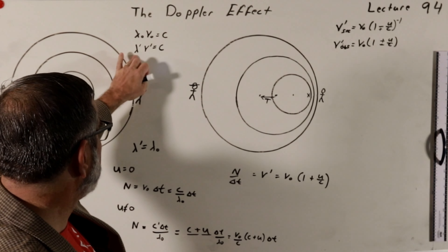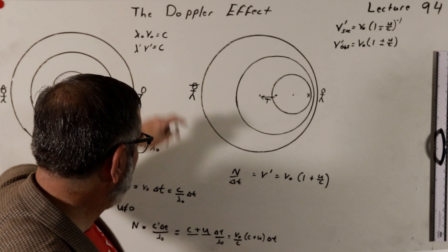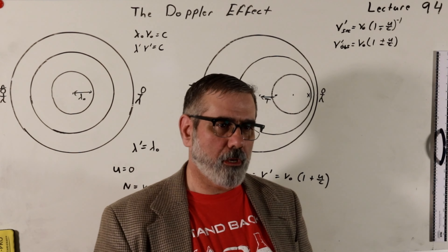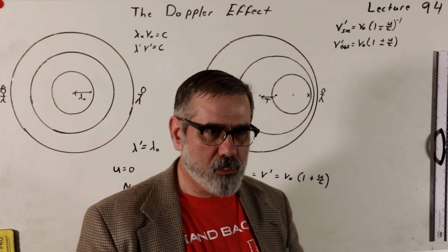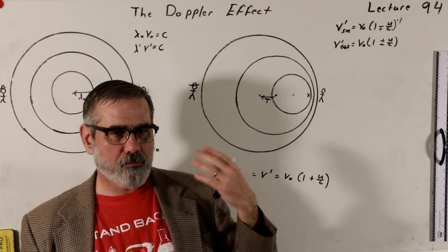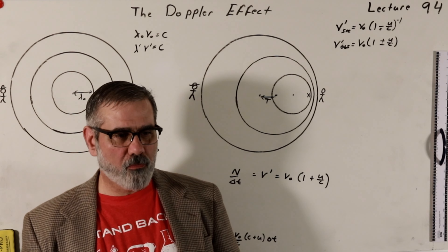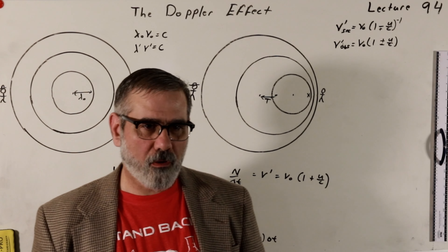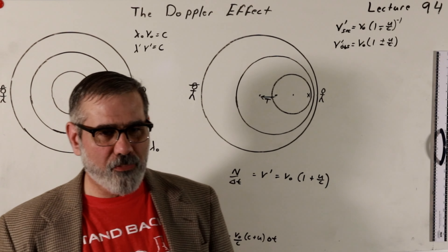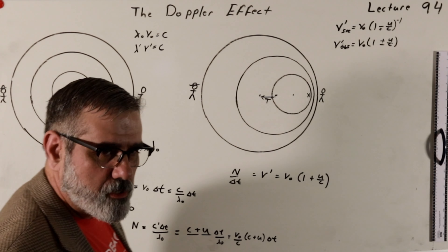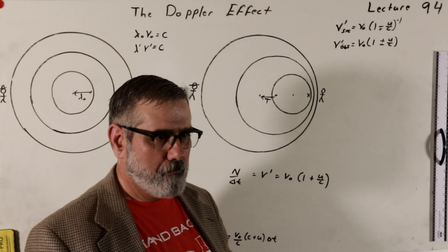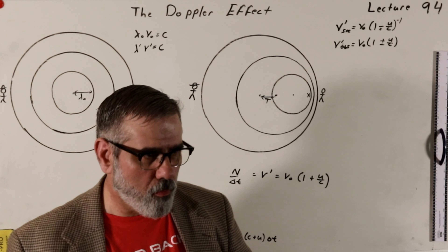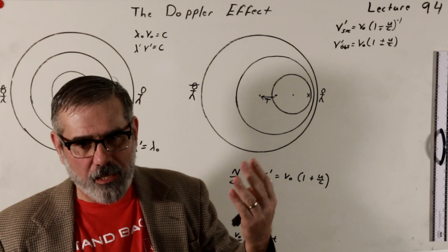Since lambda prime equals lambda nought for the moving observer, it looks like the wave speed is changing because he's moving with respect to it. If instead the wind were blowing toward a stationary observer, they'd still have this relative velocity between the wave and themselves. This is something you don't see in special relativity because there's no ether wind. Here are the two results to compare.